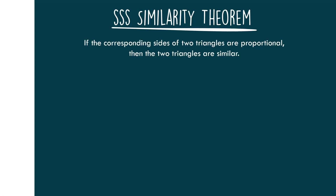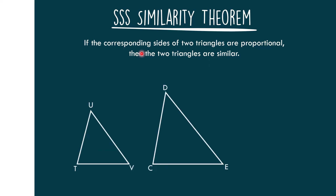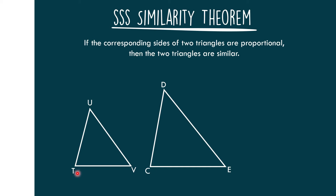This is the SSS Similarity Theorem, or the Side-Side-Side Similarity Theorem, which states that if the corresponding sides of two triangles are proportional, then the two triangles are similar. Let's have big triangle TUB and triangle CDE.